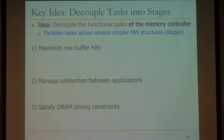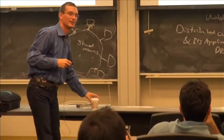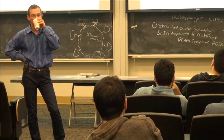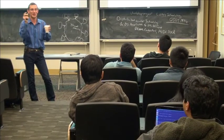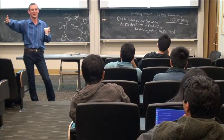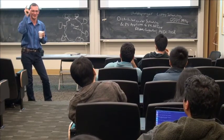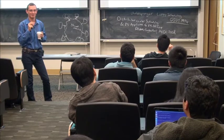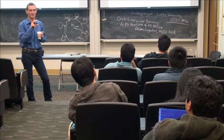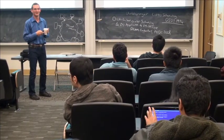A question arose about whether GPU has dedicated RAM. This work applies to systems where GPU and CPU share the same memory — like Sandy Bridge, where CPU and GPU are on the same chip sharing a memory controller. If you have separate dedicated RAM, the problem is easier since you're running a single GPU application. The basic idea of staged memory scheduling is decoupling the functional tasks of the memory controller by partitioning those tasks across several simpler structures.